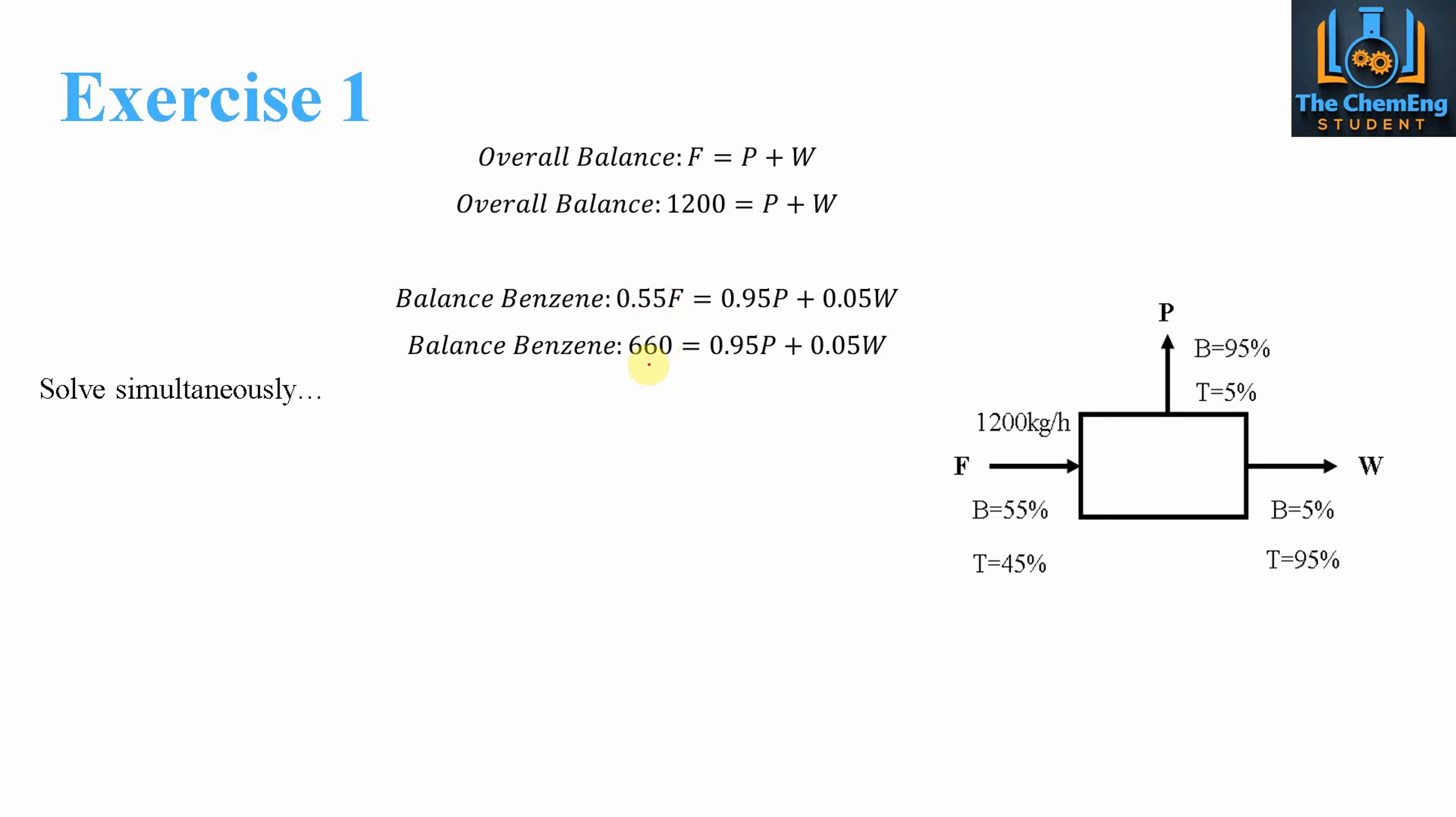Now we can solve using simultaneous equations. So we can rearrange this for P. Ultimately you could do it for W as well, but here we're going to do it for P. So we know that P is equal to 1200 minus W. So we can substitute that in here and find the value of W. So in doing so, we find that W has a flow rate of 534 kilograms per hour. So therefore we can work out what P is, because that's of course going to be 1200 minus 534. So that gives us a P value of 666 kilograms per hour.